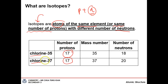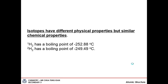For example, chlorine-35 and chlorine-37 both have 17 protons. The mass number of chlorine-35 is 35, so 35 − 17 = 18 neutrons. Chlorine-37 has 37 − 17 = 20 neutrons. So chlorine-37 has two more neutrons than chlorine-35, making it heavier. Therefore, chlorine-37 and chlorine-35 will have different physical properties but similar chemical properties. The reason for similar chemical properties will be covered later in this topic.